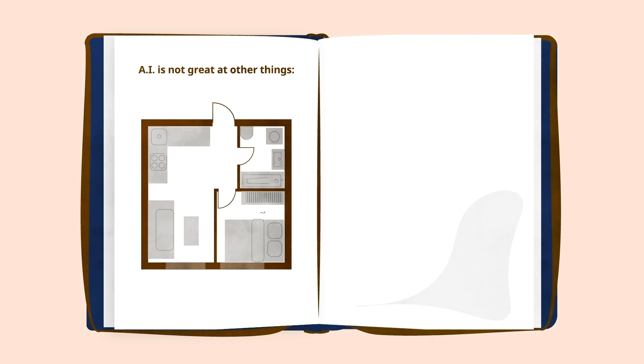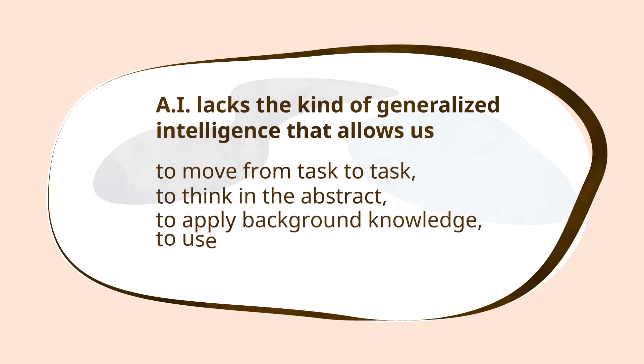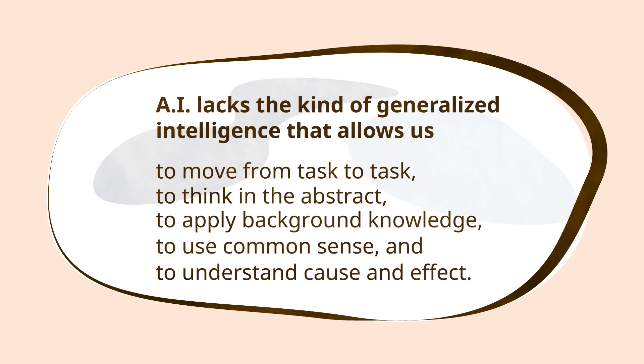However, AI is not great at other things that come easily to humans, such as navigating an unfamiliar room or detecting sarcasm. This is because, so far, AI lacks the kind of generalized intelligence that allows us to move from task to task, to think in the abstract, to apply background knowledge, to use common sense, and to understand cause and effect.